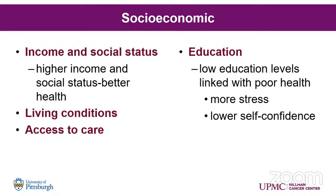Socioeconomic factors come into play largely on a lot of things, not just health. One's income and social status — the higher the income and social status, generally the better one's health status is, for many reasons. There are more resources available and greater ability to access care, which decreases stress. We also have to consider living conditions, access to care and education. Lower educational levels are generally linked with poorer health, due to more stress and lower self-confidence.